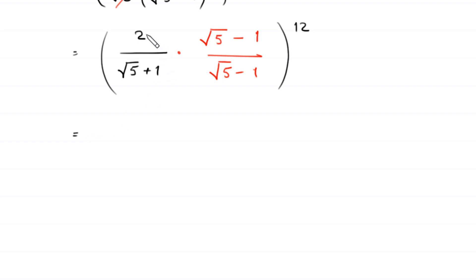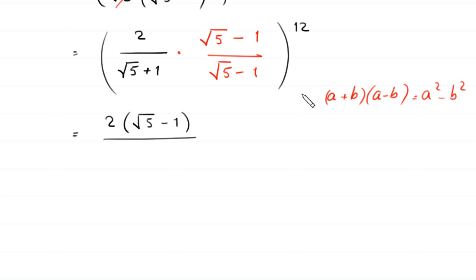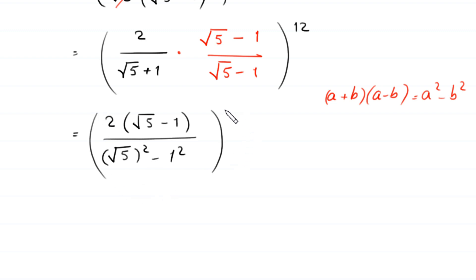Next, the numerator becomes 2 times square root of 5 minus 1. Using the algebraic identity (A+B)(A-B) = A² - B², square root of 5 plus 1 times square root of 5 minus 1 becomes square root of 5 squared minus 1 squared, whole to the power 12.